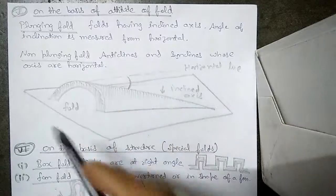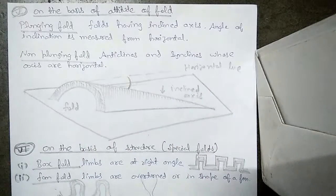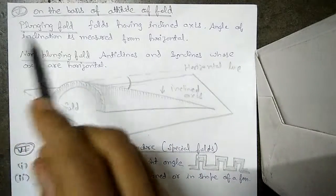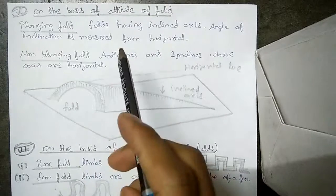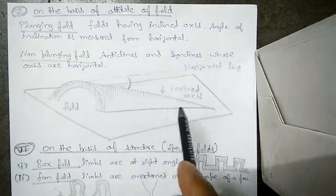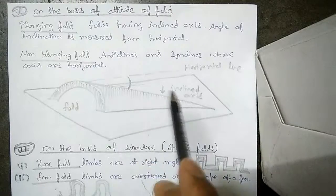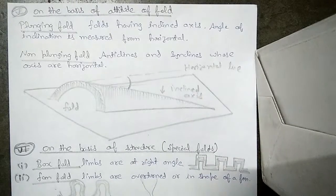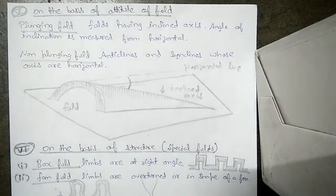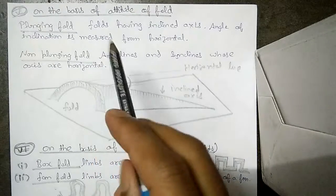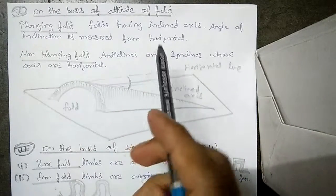What is attitude? It means how is its arrangement or orientation. So the first one is plunging fold. What is a plunging fold? Folds that are having inclined axes, whose axes are not vertical, not horizontal, but the axis is inclined, means it will make some angle with the horizontal. Such folds are called plunging folds.